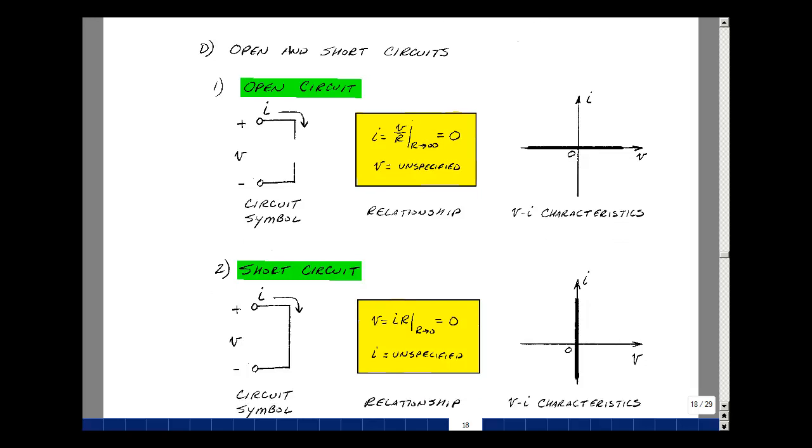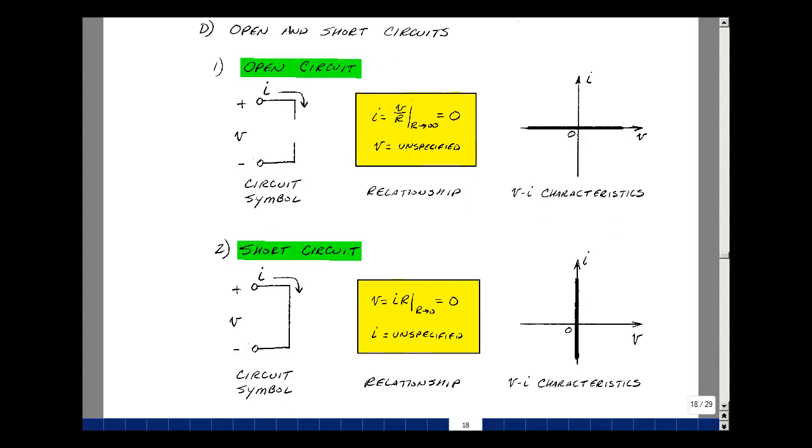A short circuit is just the opposite. Symbol is just that, just a piece of wire. Here the resistance is approaching zero, so using the first form of Ohm's law, we have I times R, but if R is approaching zero or is equal to zero, then the voltage is zero. So as long as the current is finite, then anything times zero is zero. And again, the value of current would then be arbitrary or unspecified in a short circuit. If you plotted the current voltage plot, you would now have a current that's positive, or could be negative, or could be zero for a value of zero volts.